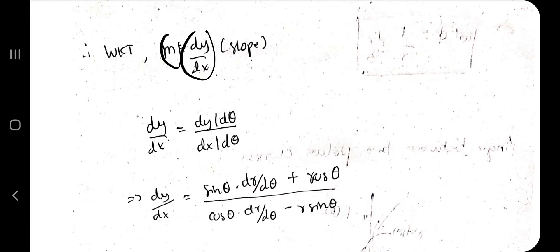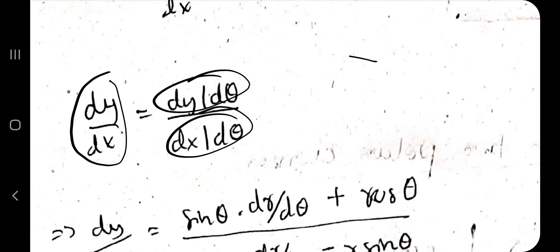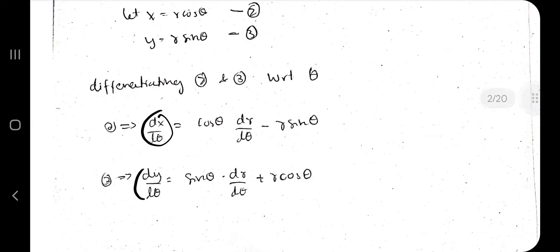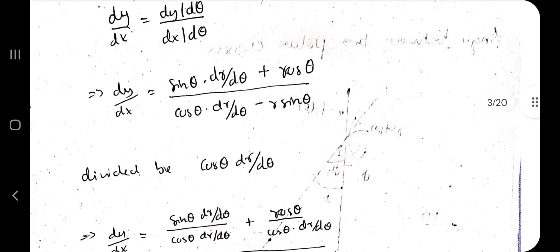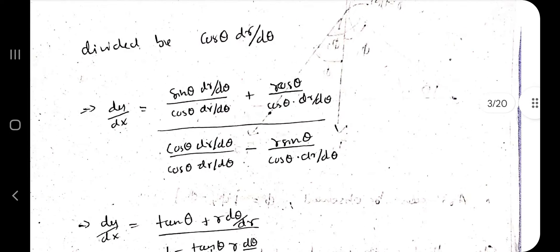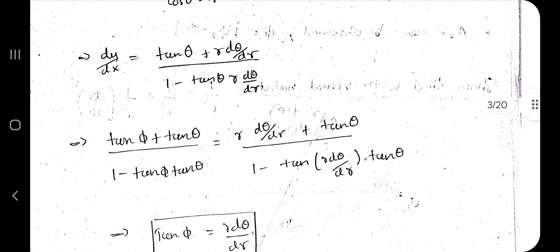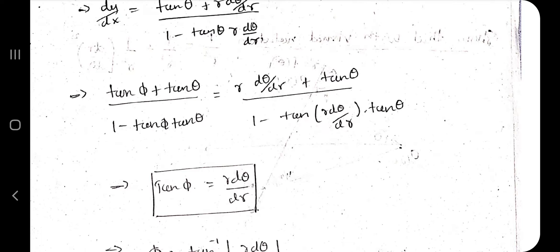The slope m = dy/dx = (dy/dθ)/(dx/dθ). We substitute the expressions for dx/dθ and dy/dθ that we just found. To simplify, divide the numerator and denominator by cos(θ)·(dr/dθ), which leads to a simplified form. Taking r as common and further simplification gives us the angle.